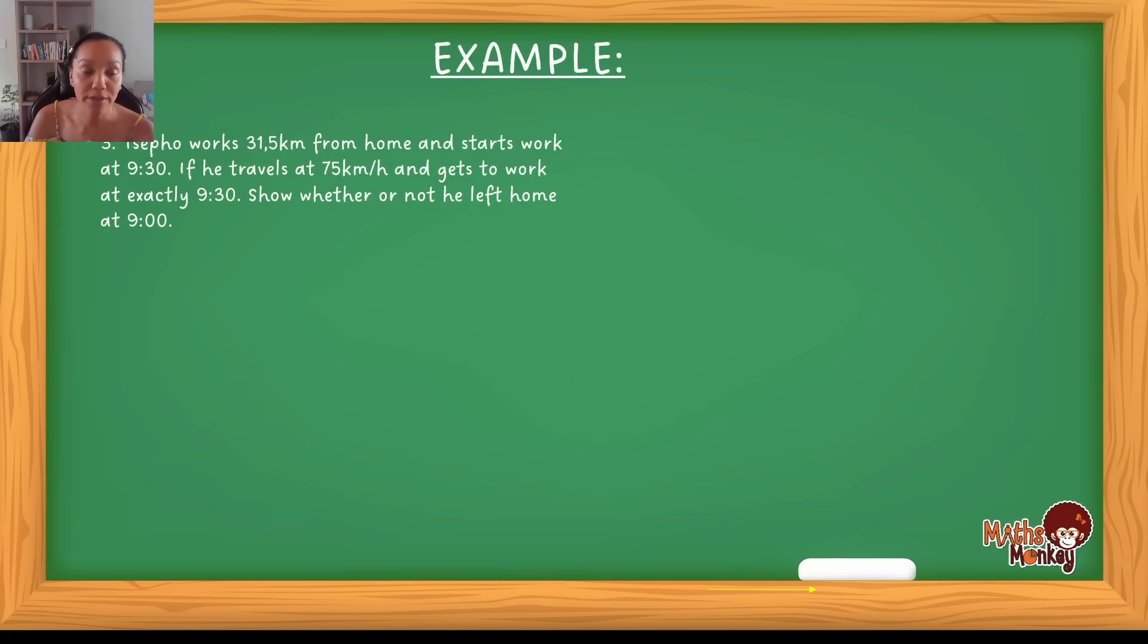Let's move to one last example. So, Tsepo, and Tsepo is very busy. As you can tell, Tsepo is traveling very much. So, Tsepo works 31.5 kilometers from home and starts work at half past nine. If he travels at a speed of 75 kilometers per hour and gets to work at exactly 9.30, show whether or not he left home at nine. So if you look at this question, again, we ask ourselves what is given. So he works 31.5 kilometers from home. So that's our distance. Then he travels at a speed of 75 kilometers per hour. So now they want to know if he got to work at exactly half past nine, did he leave at exactly nine o'clock? So we need to calculate the time.